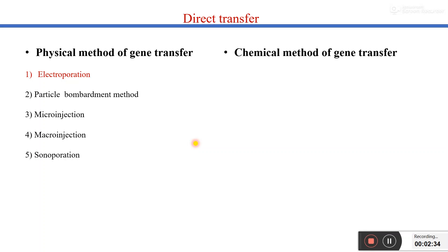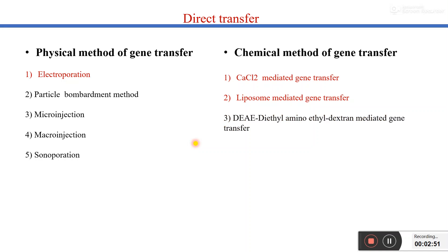Under chemical methods of gene transfer, we have: CaCl2-mediated gene transfer, also known as bacterial transformation; liposome-mediated gene transfer, also known as lipofection; DEAE (diethylaminoethyl) dextrin-mediated gene transfer; and polyethylene glycol-mediated gene transfer. We will discuss all these gene transfer methods in detail one by one.